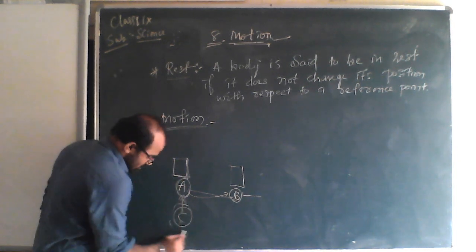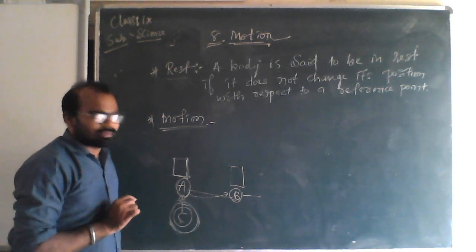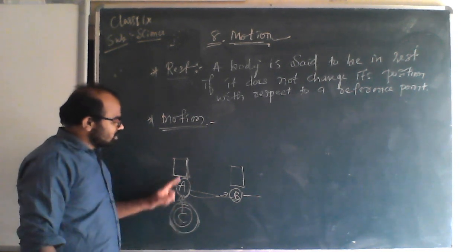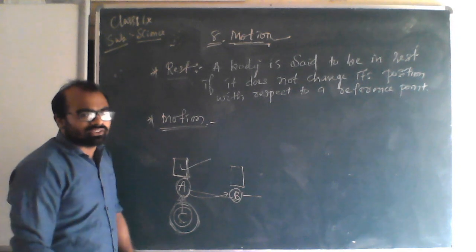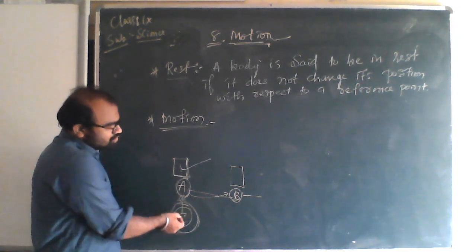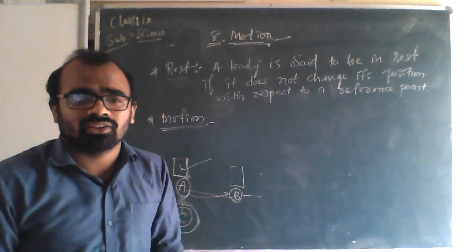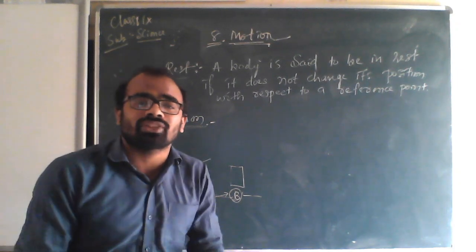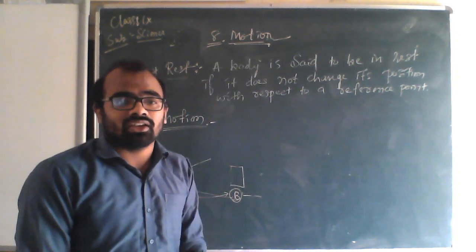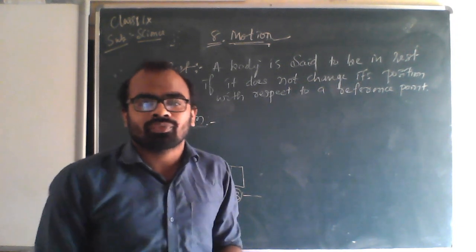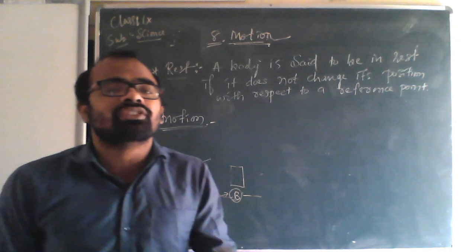For example, if C is in rest, that means it is not changing its position with respect to a reference point — this point itself is the reference point. It is not changing its position with respect to the reference point, so it is said to be in rest. A body is said to be in rest if it does not change its position with respect to a reference point.